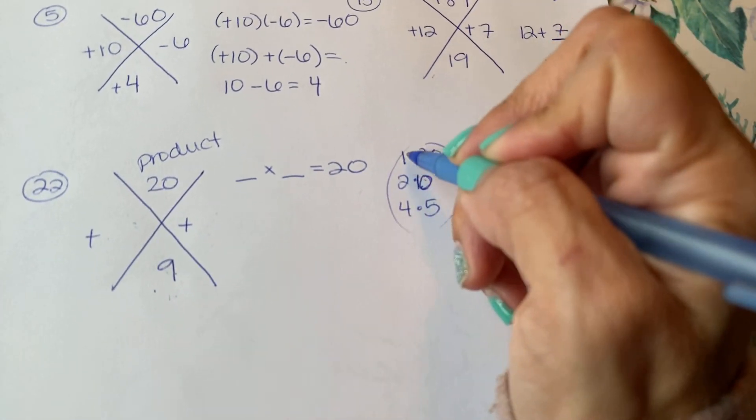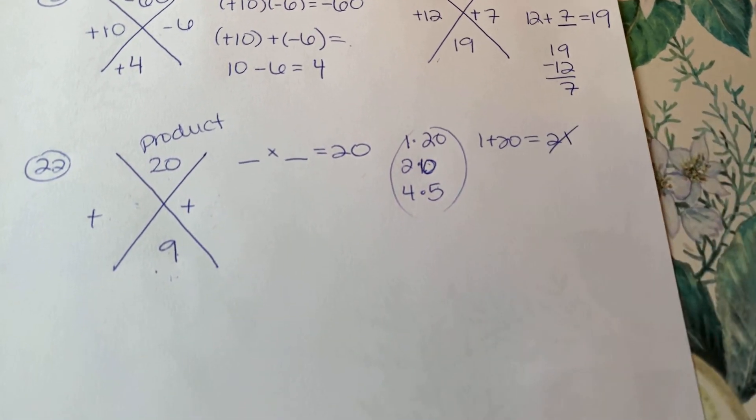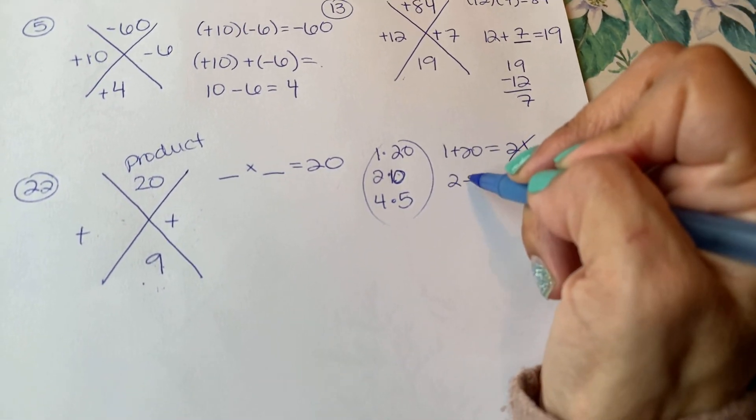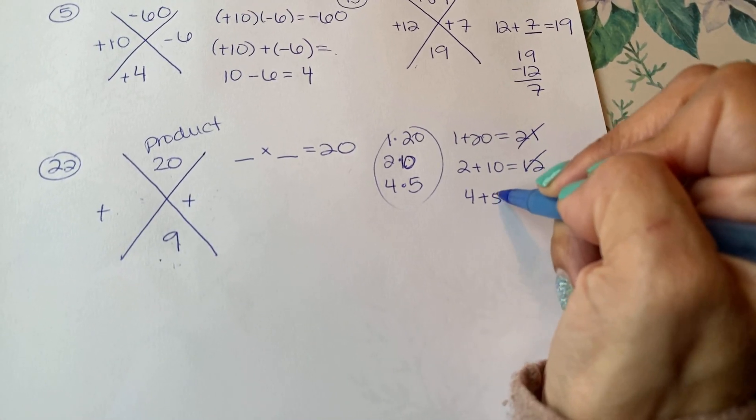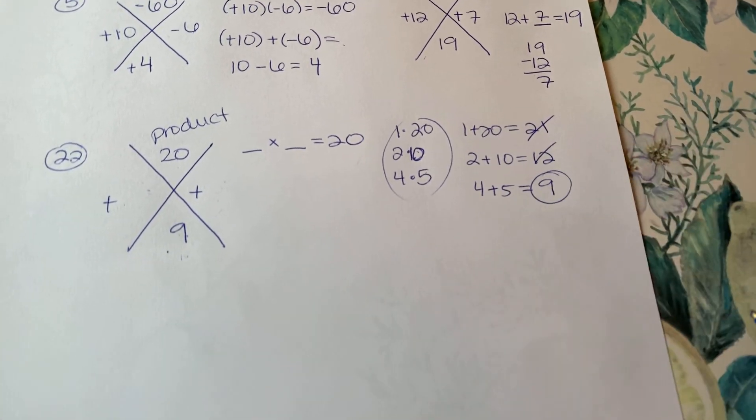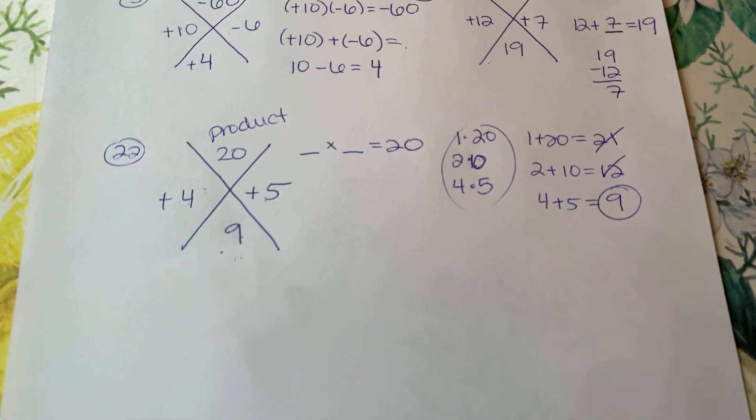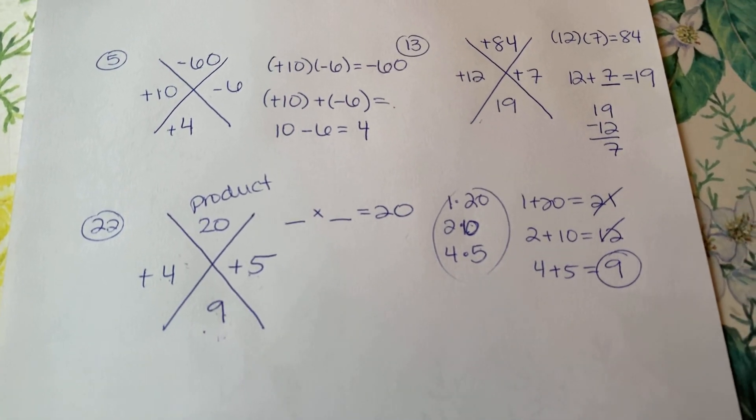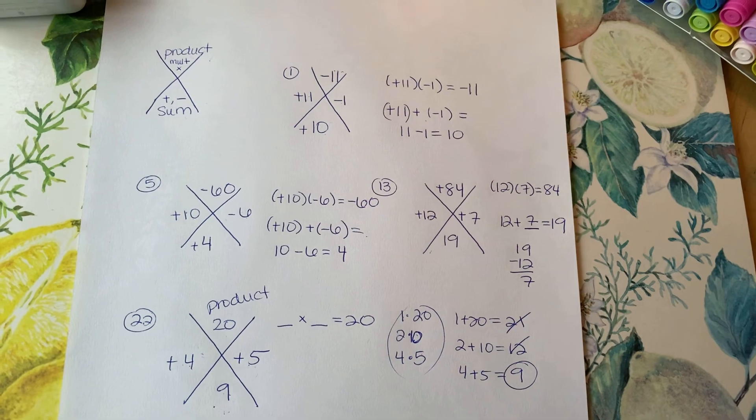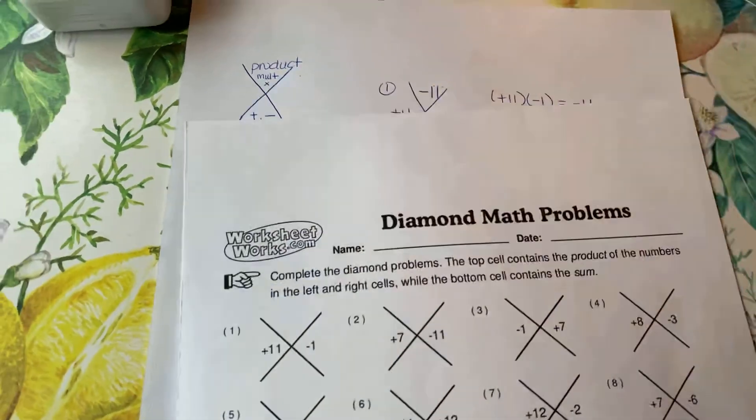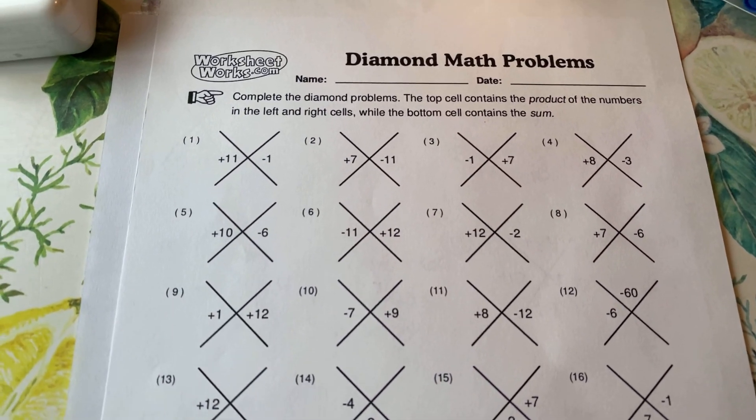So what's 1 plus 20? 21, nope. What's 2 plus 10? 12, nope. What's 4 plus 5? 9, and there's my winner. So this is 4 and 5. And again if you did 5, 4, it doesn't matter. That is the diamond method, that's what this worksheet is covering. Alright, I'll end it, bye guys.